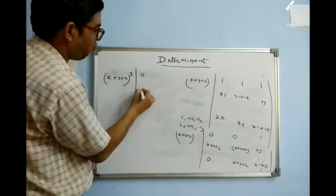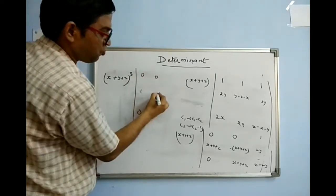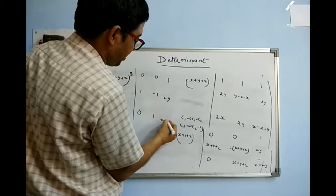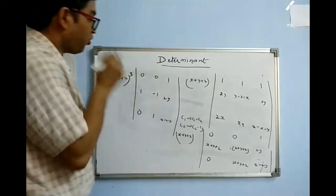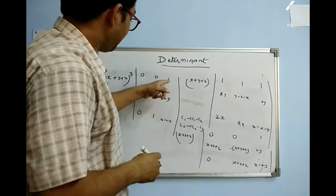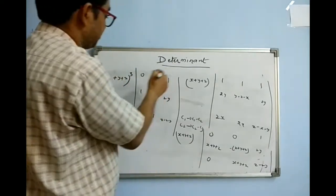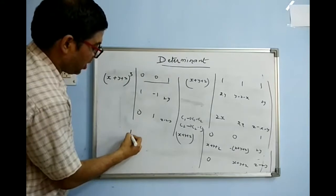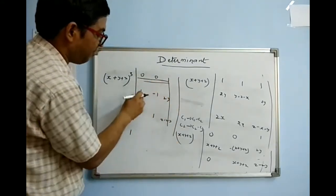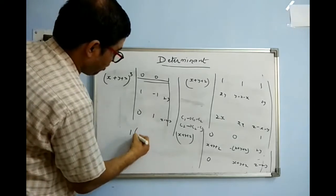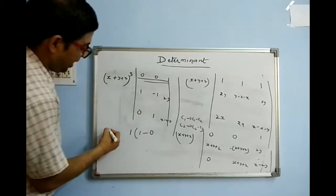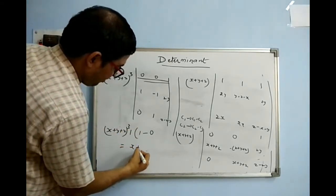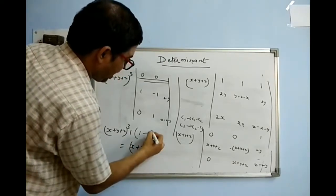After taking all common factors, the remaining determinant is: R1 = [0, 0, 1], R2 = [1, −1, 2y], R3 = [0, 1, z−x−y]. Two zeros are in R1 and C1. Expanding along C1: 1 into (1×1 − (−1)×0) = 1. So the determinant equals (x+y+z)³ × 1 = (x+y+z)³, which is what we needed to prove.